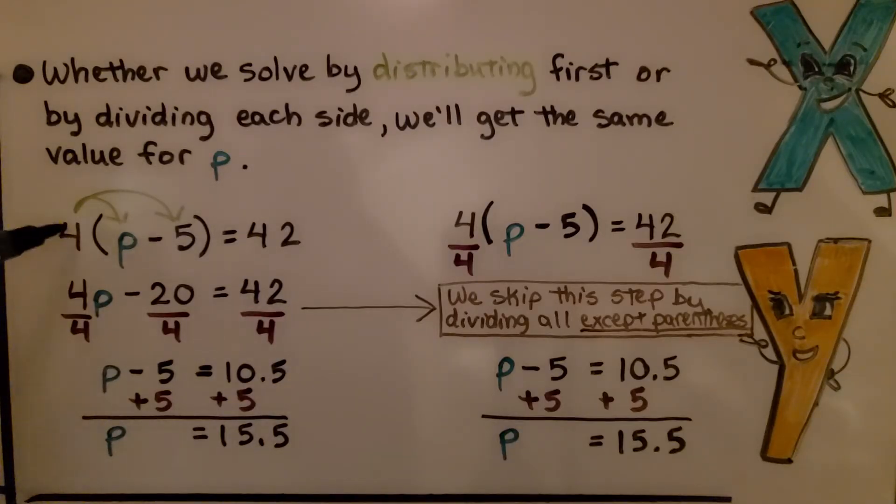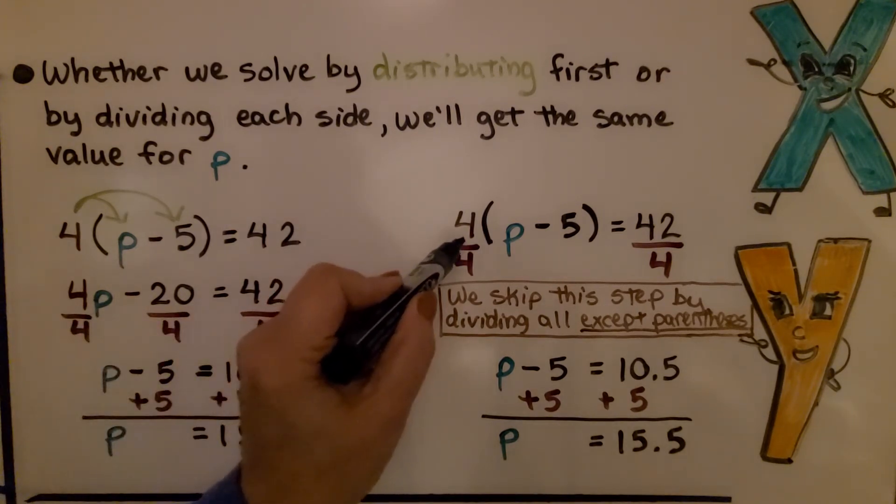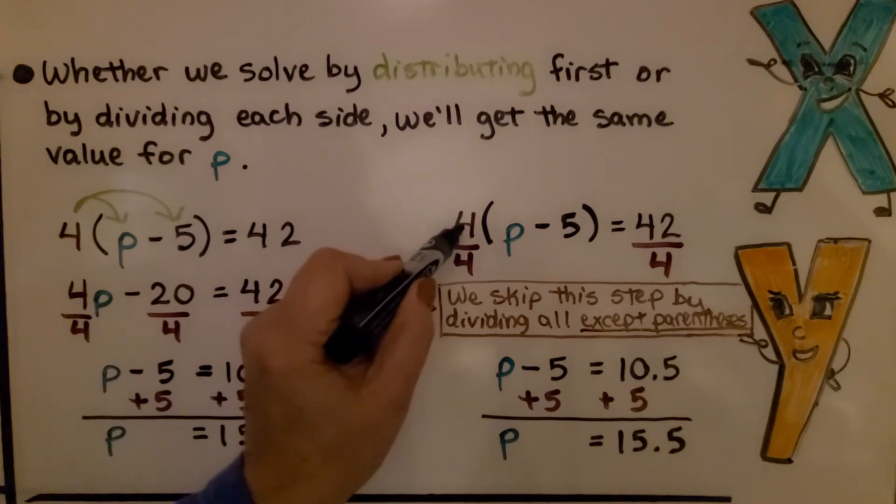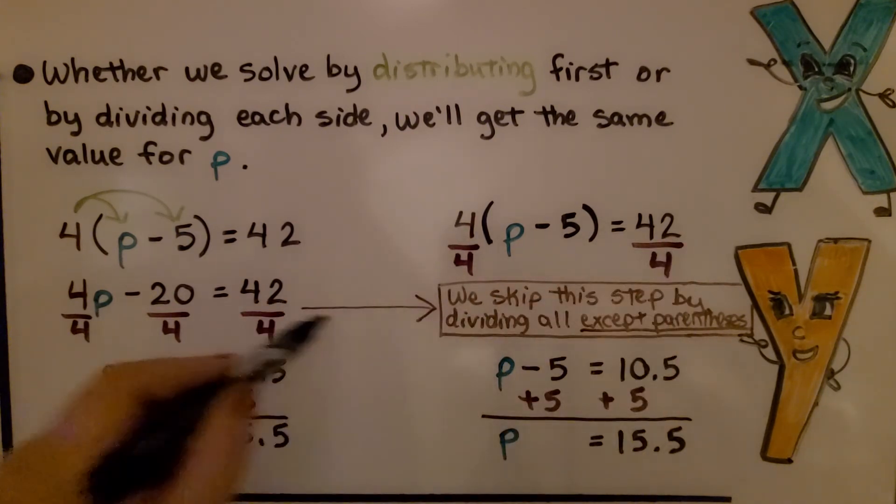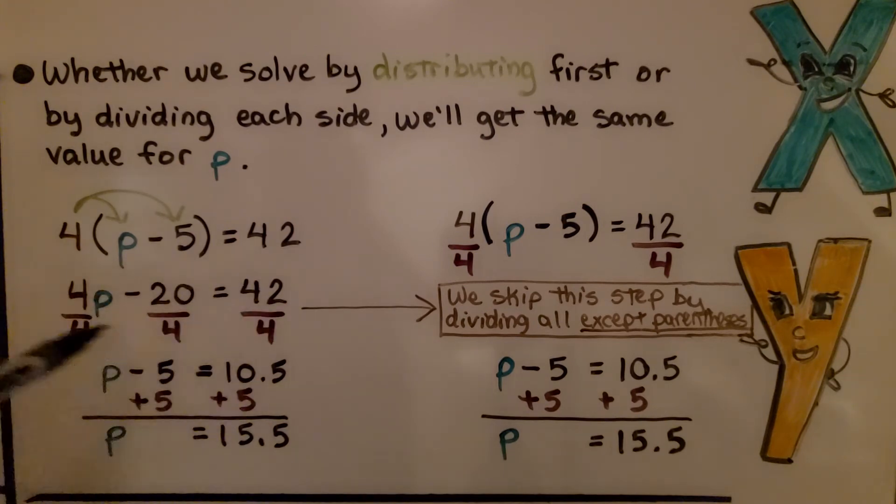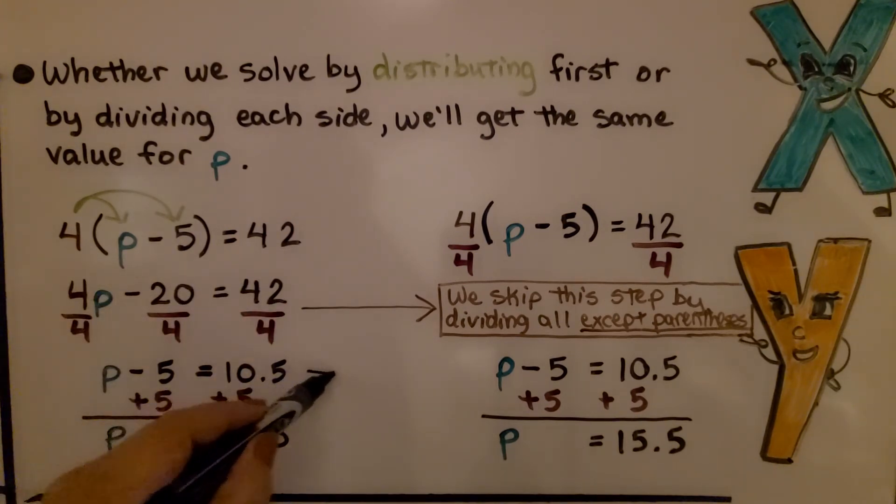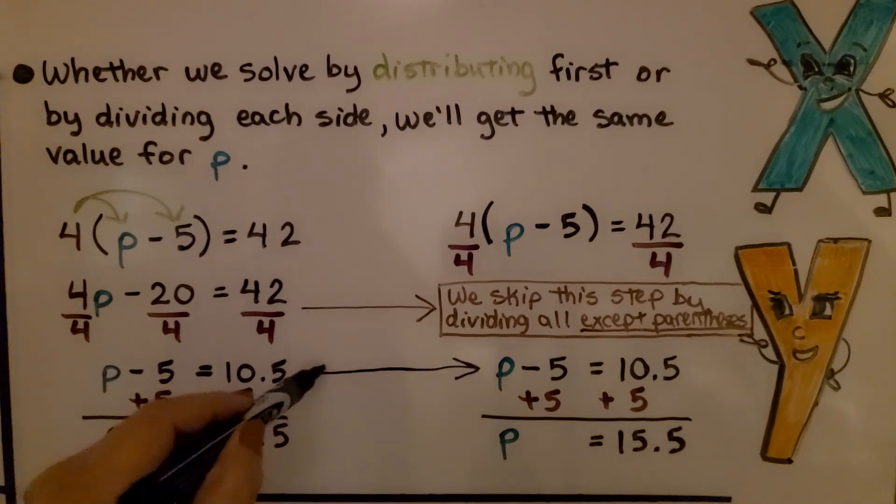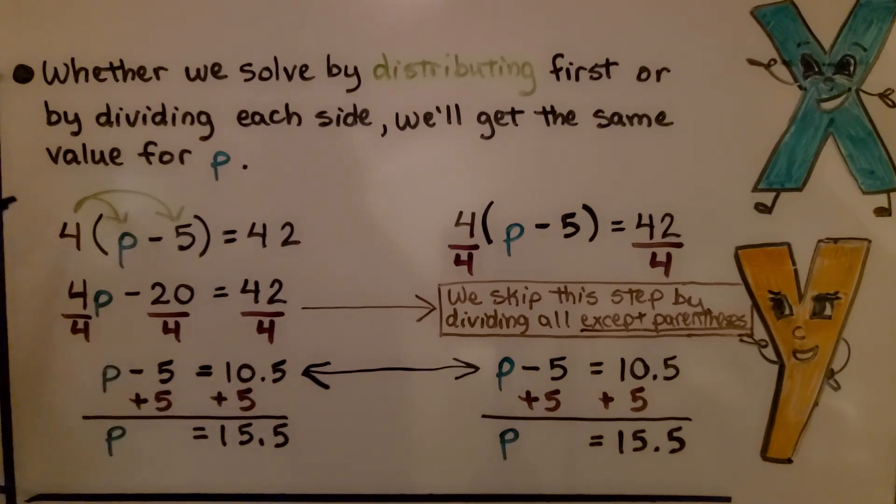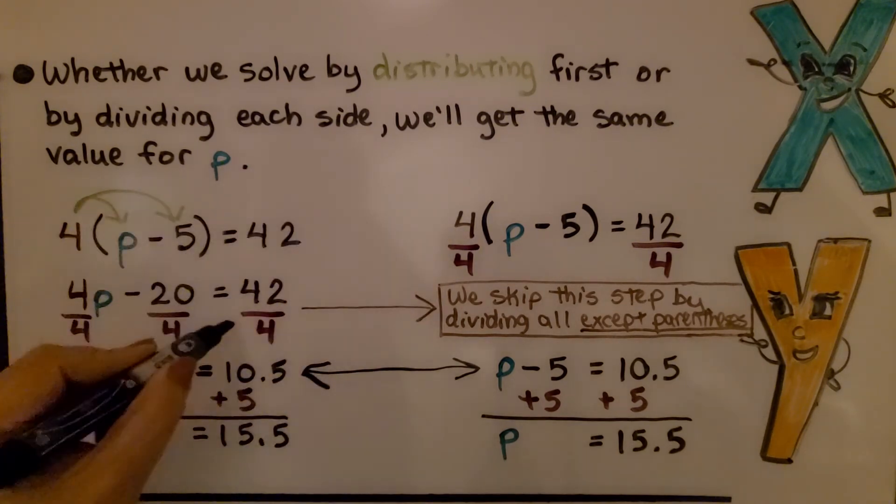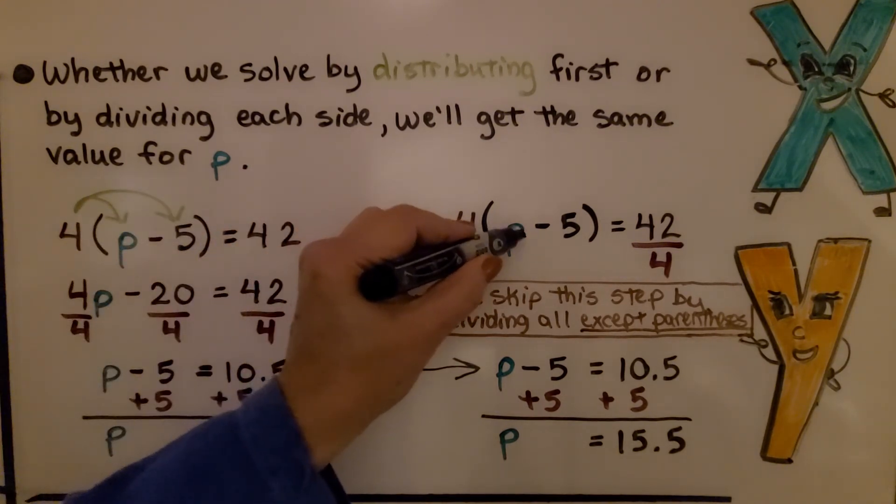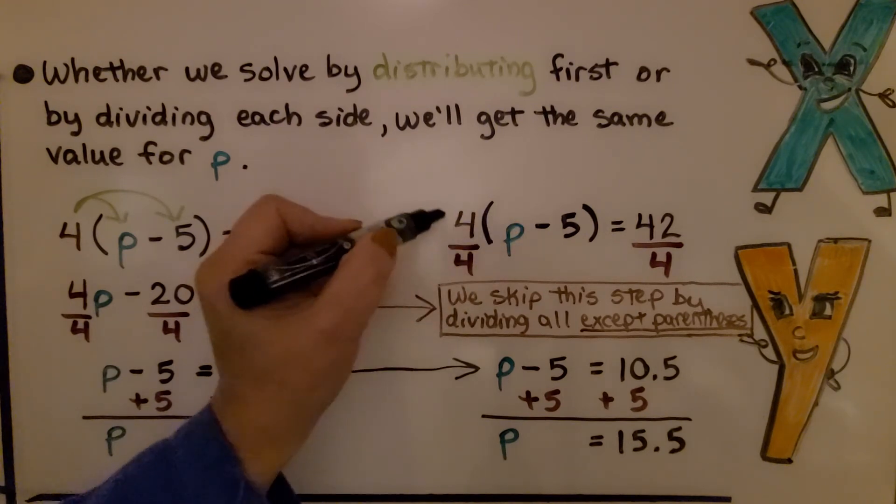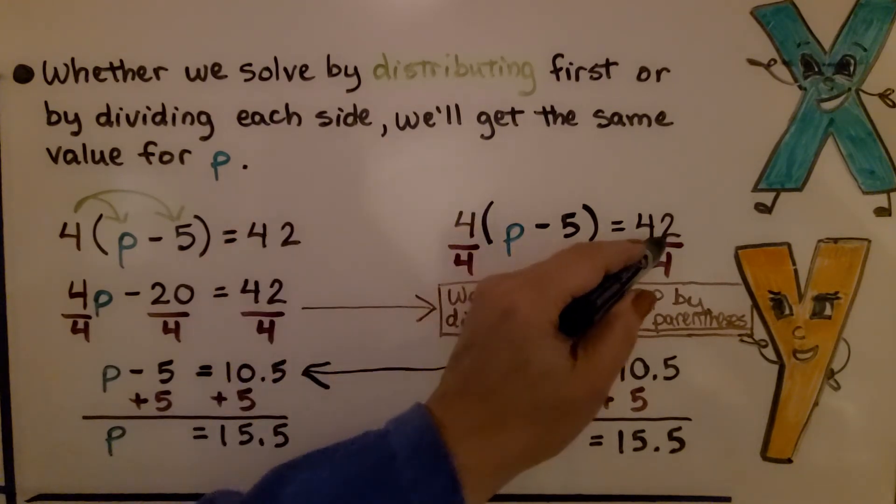So whether we solve by distributing first or by just dividing each side, we'll get the same value for P. The only difference is if we go straight into dividing this 4 outside of the parentheses and this 42, we end up skipping this part. We're going straight to this part. See how these are the same? So you can solve it this way if it makes more sense to you, but we can also go quicker and skip this step if you can remember not to do anything with the parentheses. We just divide this by 4 and this by 4.